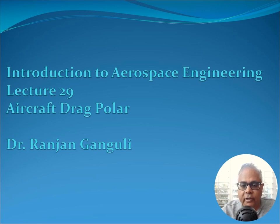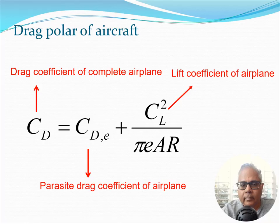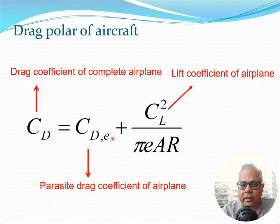Hi students, today we start lecture 29 and I'm going to discuss the aircraft drag polar. I'm Dr. Ranjan Ganguly. We have looked at the drag polar before for a wing, and now we are going to extend this concept to the complete aircraft. The drag polar of the aircraft is given by: CD = CDE + CL² / (π·e·AR), where CD is the drag coefficient of the complete airplane, CDE is the parasite drag coefficient, CL is the lift coefficient, e is the spanwise efficiency factor (equal to one for elliptical lift distribution), and AR is the aspect ratio of the wing.